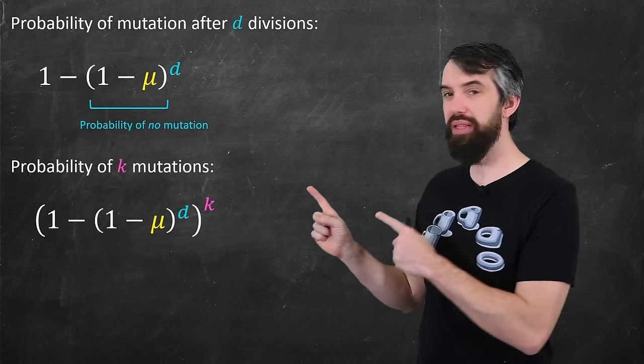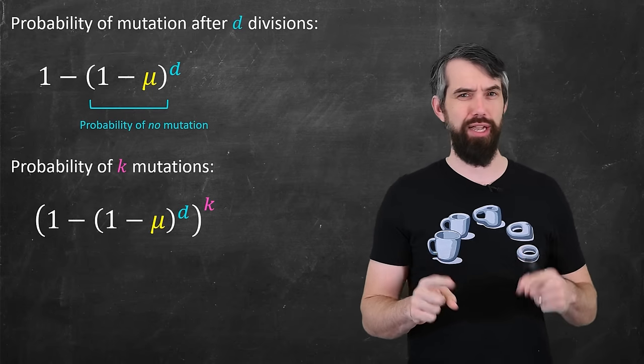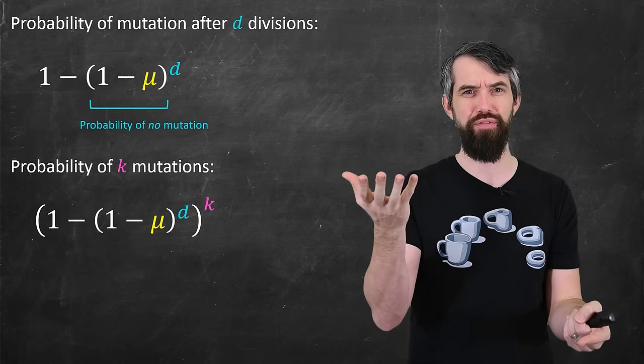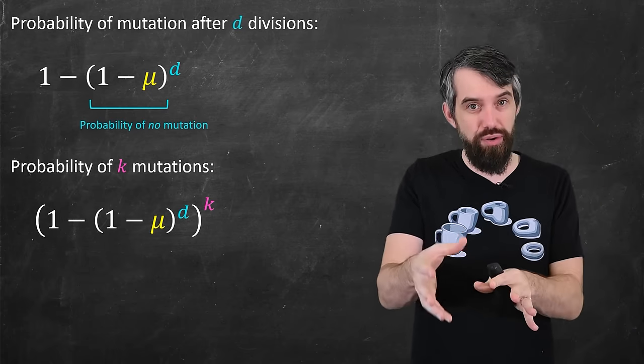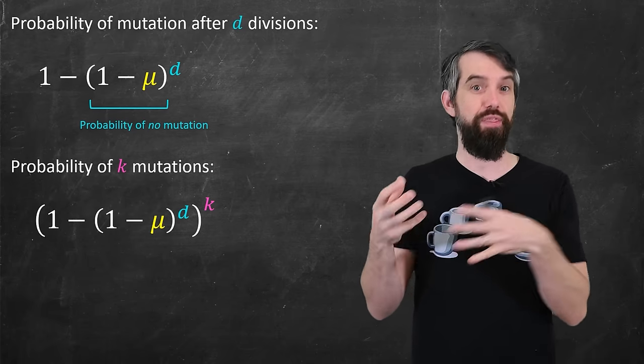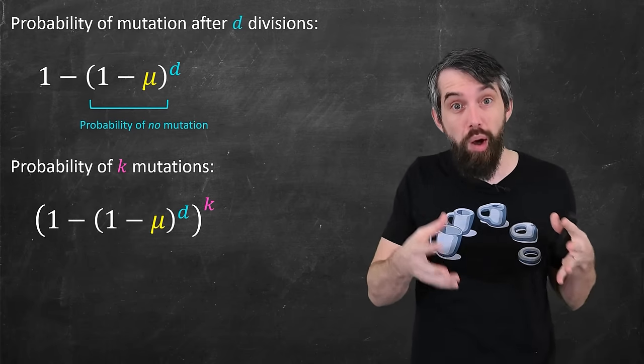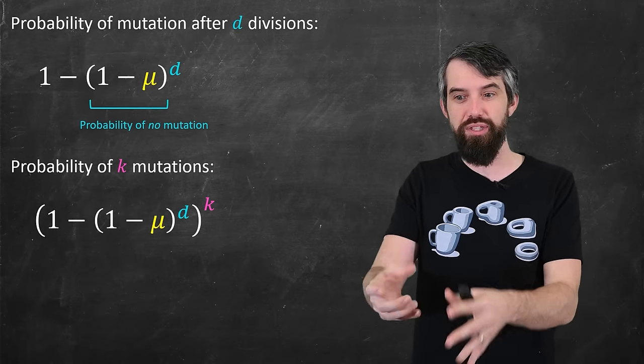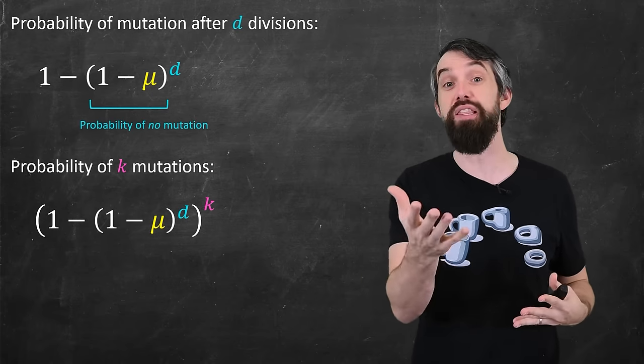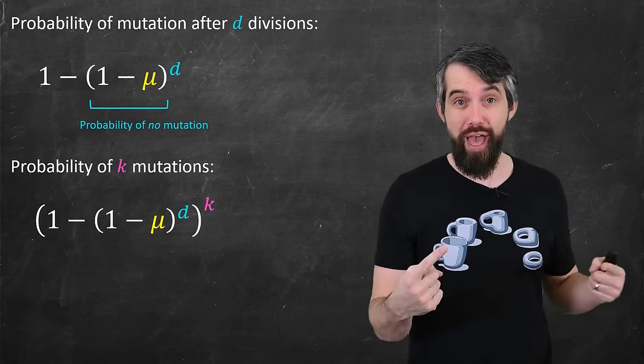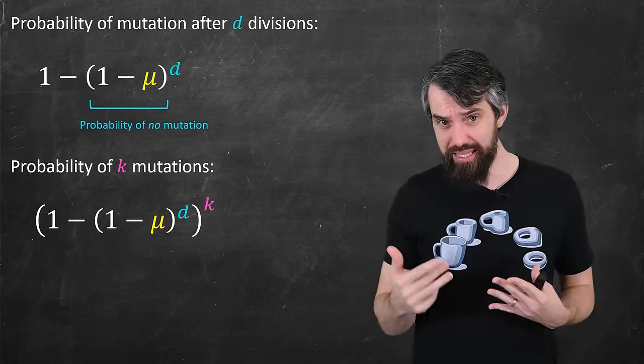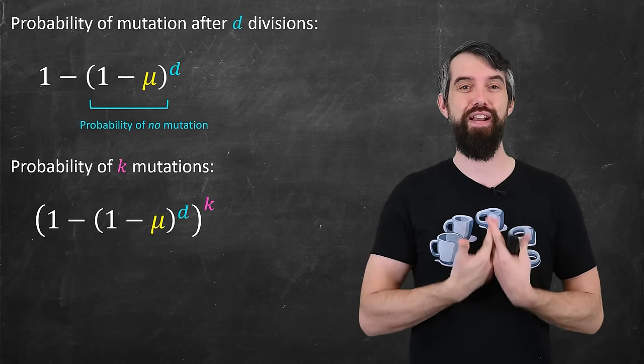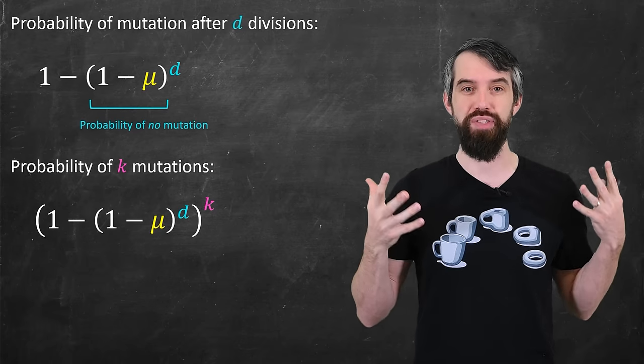Now, the probability for that is, I just take the previous thing and raise it to the power of k. The probability that there's k mutations, it has to happen the first time, the second time, the third time, all the way to the kth time. That low probability is multiplied k times. So you take the 1 minus 1 minus mu to the d that you had before, and raise all of that to the power of k. Since these are small numbers, raising the power of k has made it even less likely, but now we get to deal with the fact there's a massive number of cells.